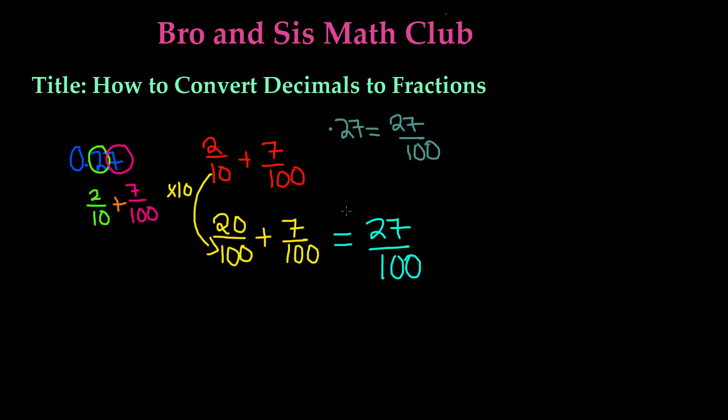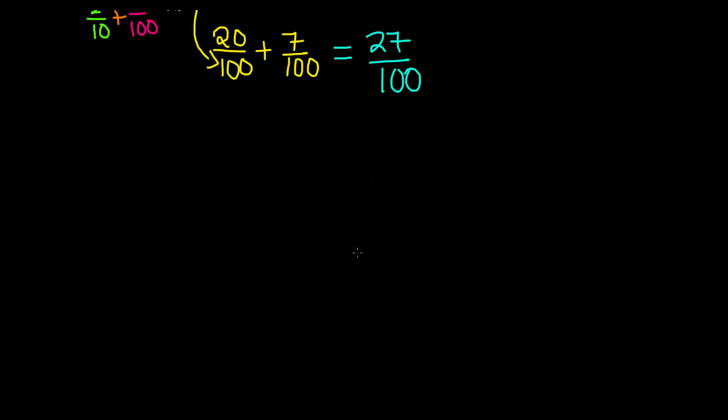Now there's another way we can do this. We're going to keep the same decimal, 0.27. This is the way that I prefer to do it: think of the decimal point as the number 1.